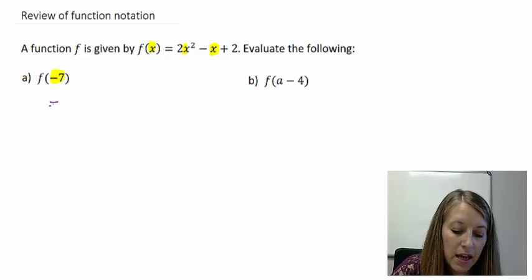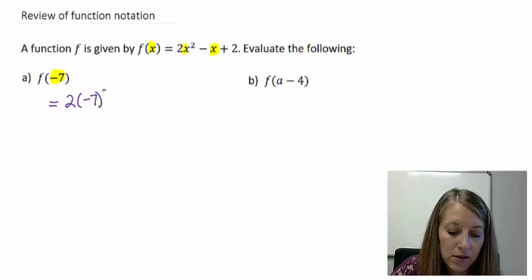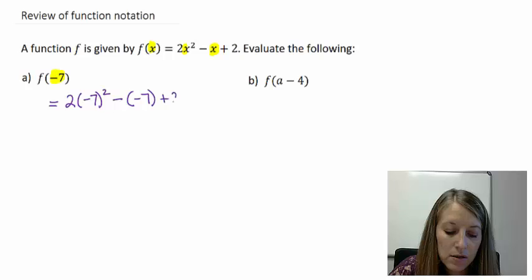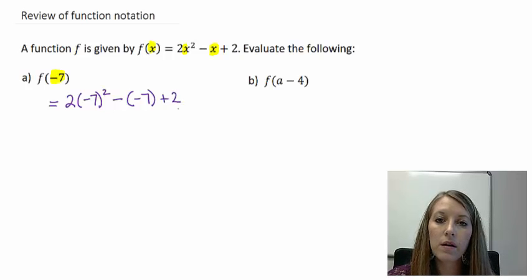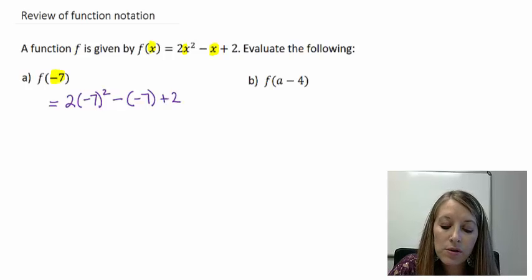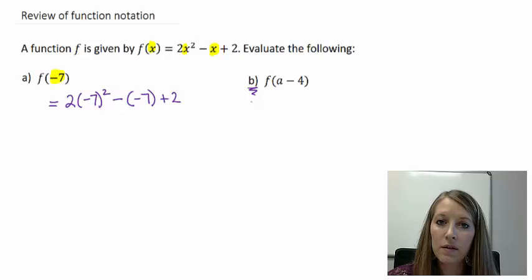So that is 2 times negative 7 squared minus a negative 7 plus 2. Now I suggest that you pause the video to simplify this on your own and also see if you can complete part b. Now that's a review problem, so you should be able to.